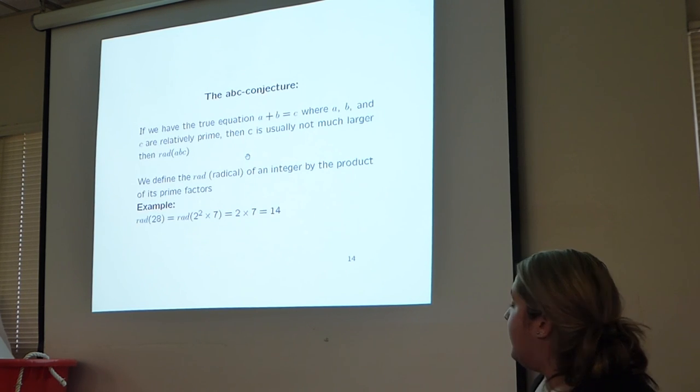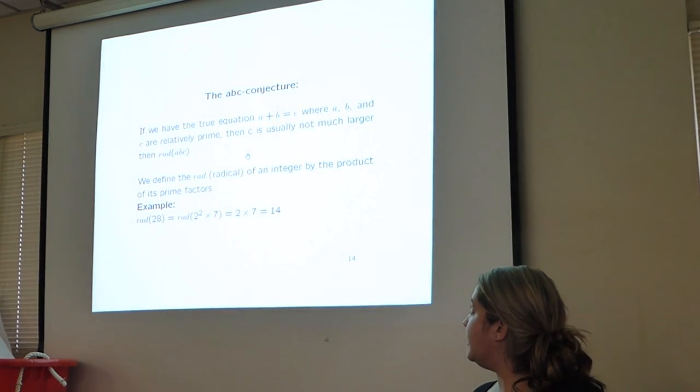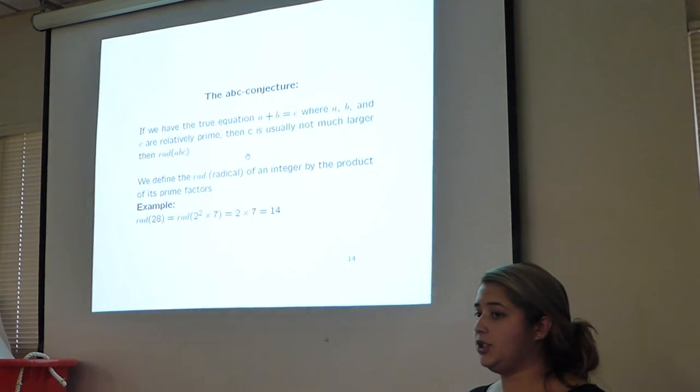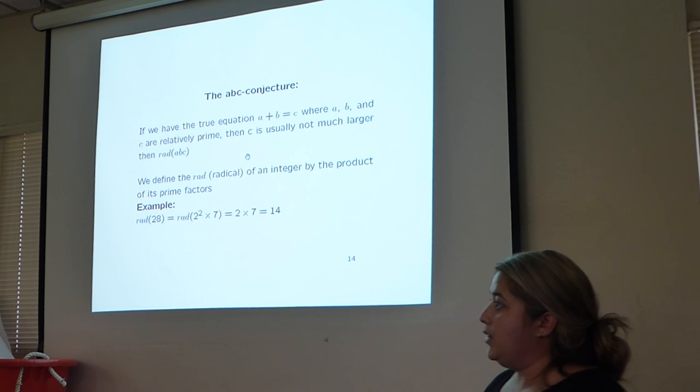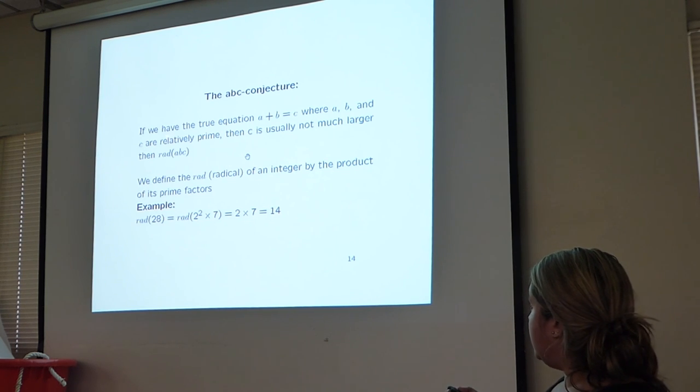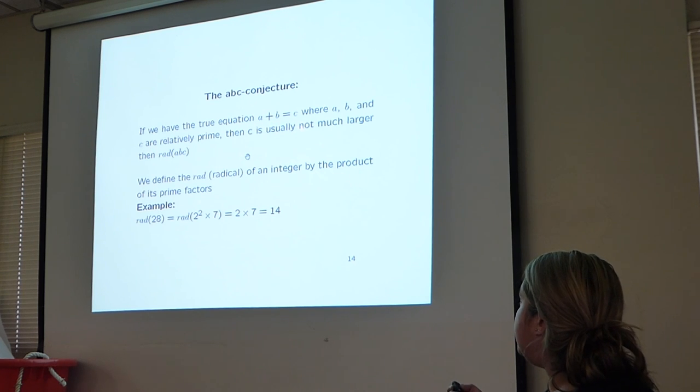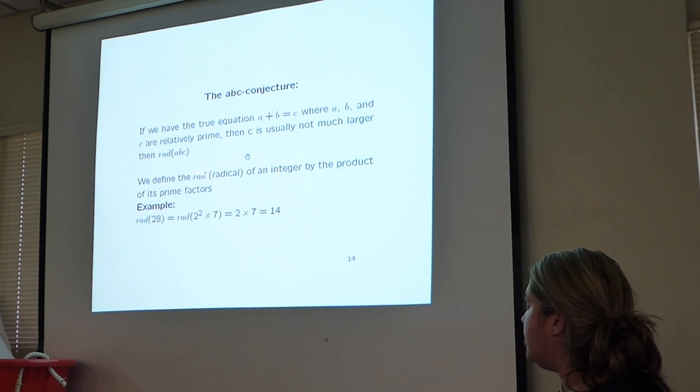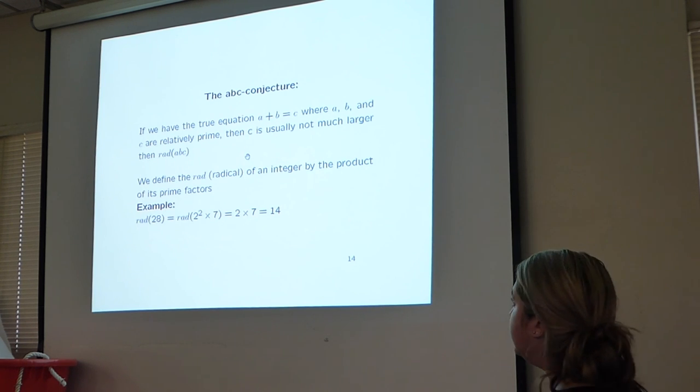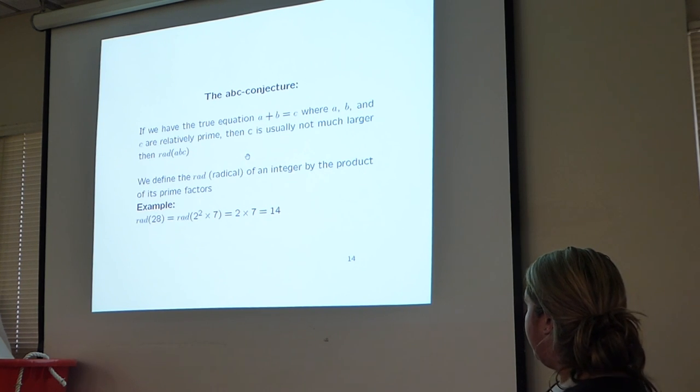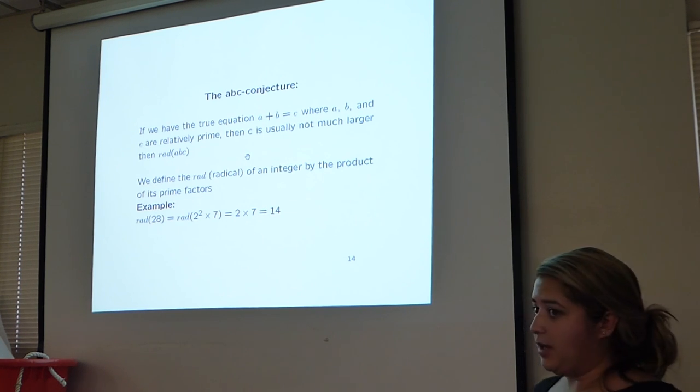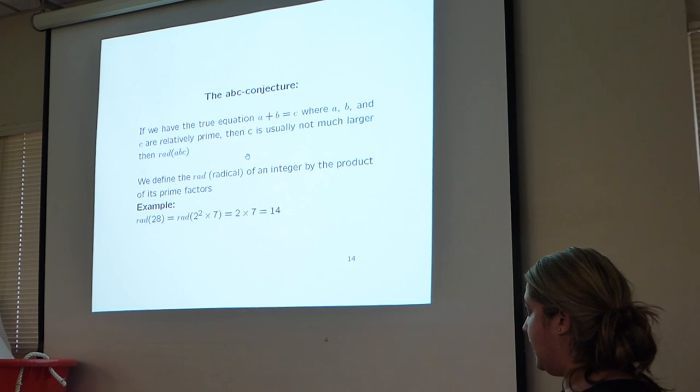At the end of Dr. Hendrik Lenstra's lecture, he briefly mentioned the ABC conjecture. We looked at the ABC conjecture more. This is the definition: if we have the true equation A plus B equals C, where A, B, and C are relatively prime, then C is usually not much longer than the radical of ABC, the product of ABC. We define the radical of an integer by the product of its prime factors. Here's an example of the radical of 28. We get its prime factors, 2 squared times 7, we just multiply the prime factors, and we get 14.